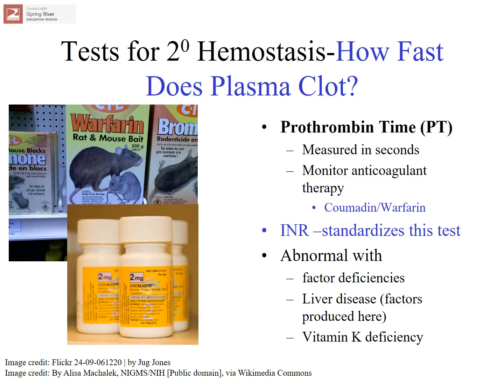The prothrombin time and the INR will be abnormal — elevated, or taking too many seconds to clot — in instances where somebody has a coagulation factor deficiency, liver disease (since coagulation factors are produced in the liver), or vitamin K deficiency, which can happen for many reasons including nutritional problems. Vitamin K is essential for the production of the clotting factors measured with the prothrombin time.